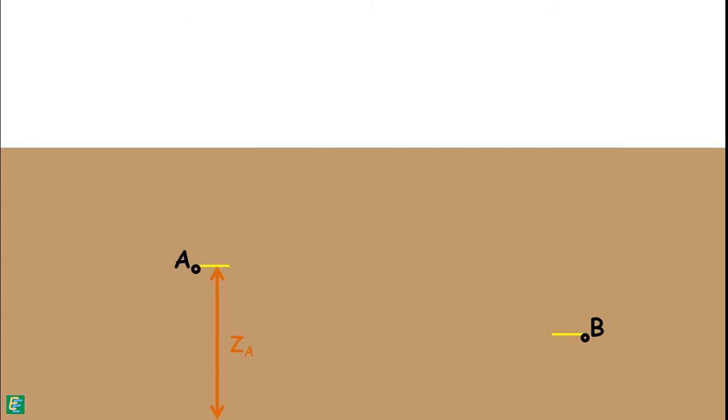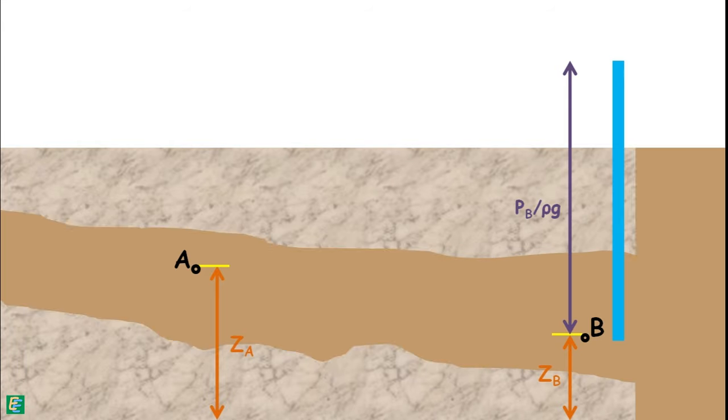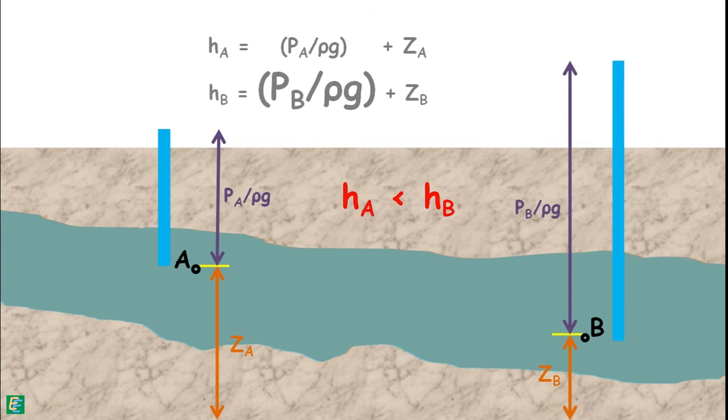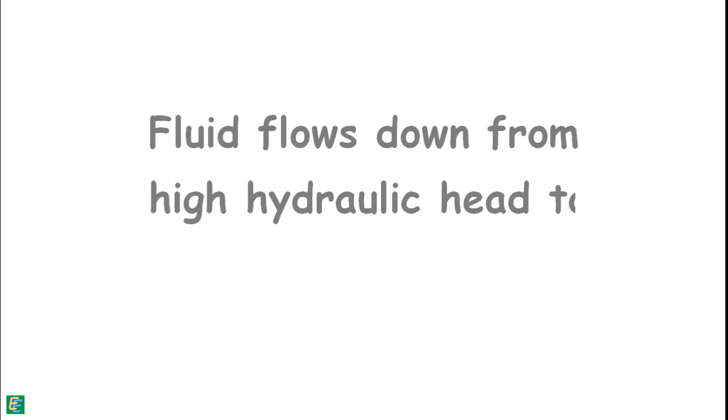Elevation of point A is higher than that of point B. But suppose if point B has high pressure head because of any geological confined aquifer conditions, then total head of point B may be higher than that of point A. In that case, water will flow from point B to A even against gravity. Note that fluid flows down from high hydraulic head to low hydraulic head.